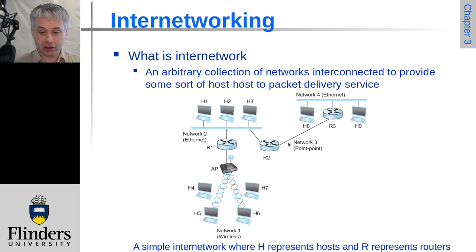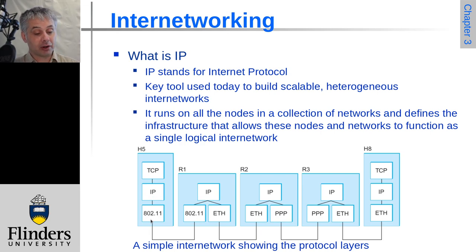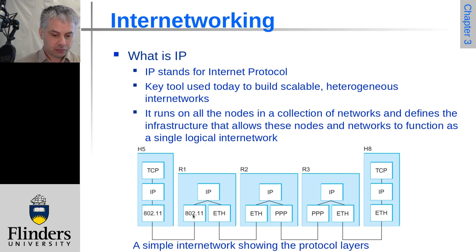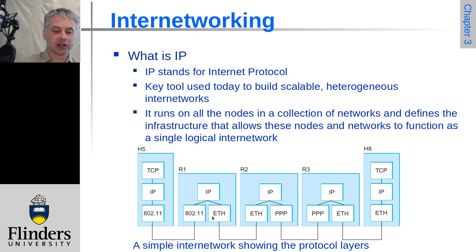The point-to-point link might be a dial-up link. Host 5 sends a TCP packet encapsulated in an IP packet, then encapsulated in an 802.11 Wi-Fi frame across Wi-Fi. It arrives at the first router — routers only need to process up to the IP layer, not TCP. The 802.11 frame is decapsulated back to an IP packet, and the router checks its routing table and re-encapsulates the IP packet in an Ethernet frame to send it out.